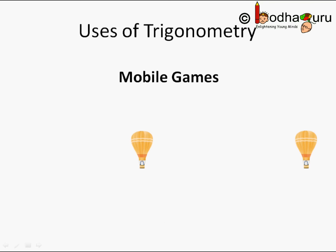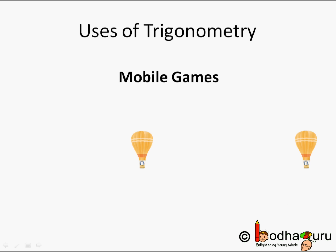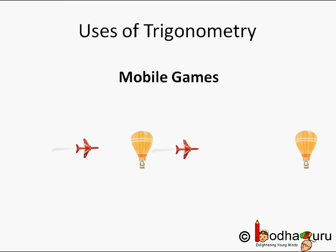Being a software engineer myself, I have used trigonometry heavily in designing mobile games. For example, here is a game where the user is flying an airplane and there are certain objects that may come in the way randomly. When the user changes the direction of the plane using the controls, the mobile game needs to change the direction of the plane. How do you do that?